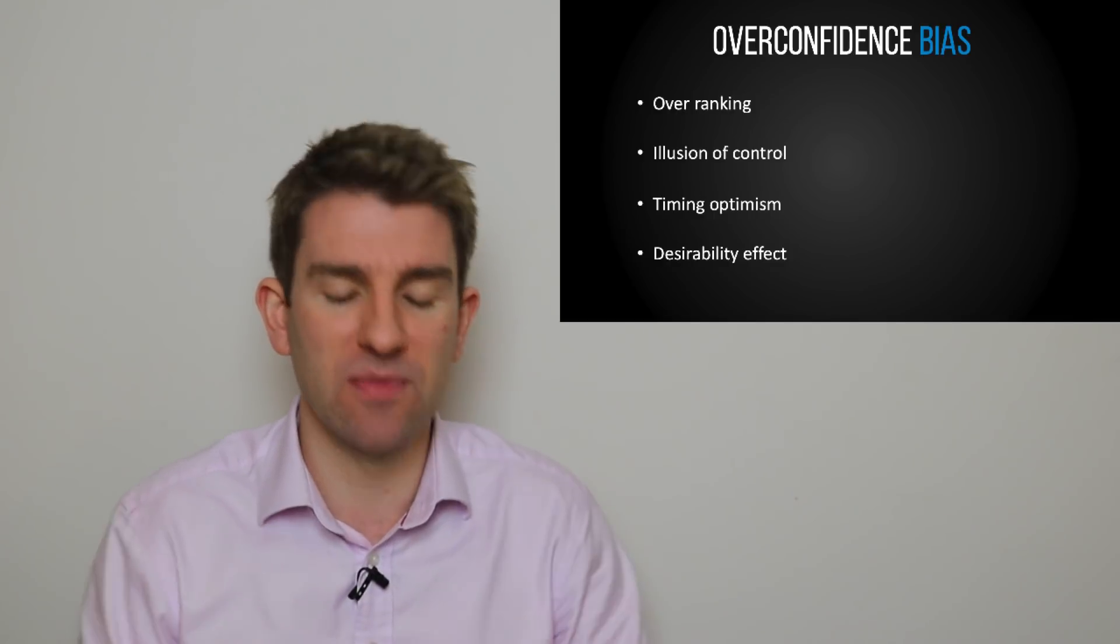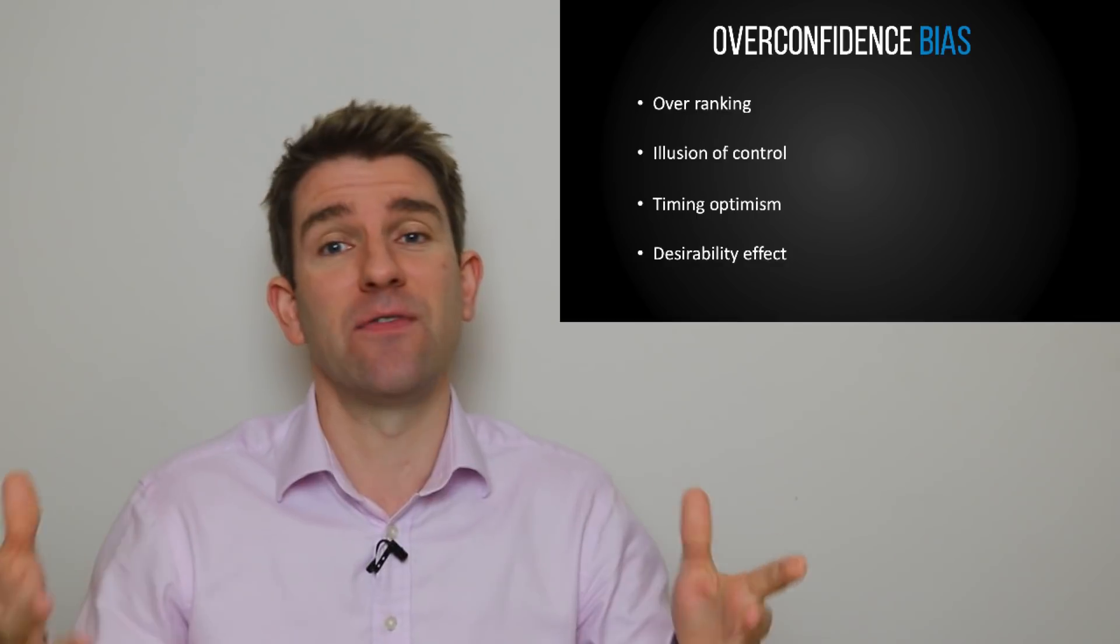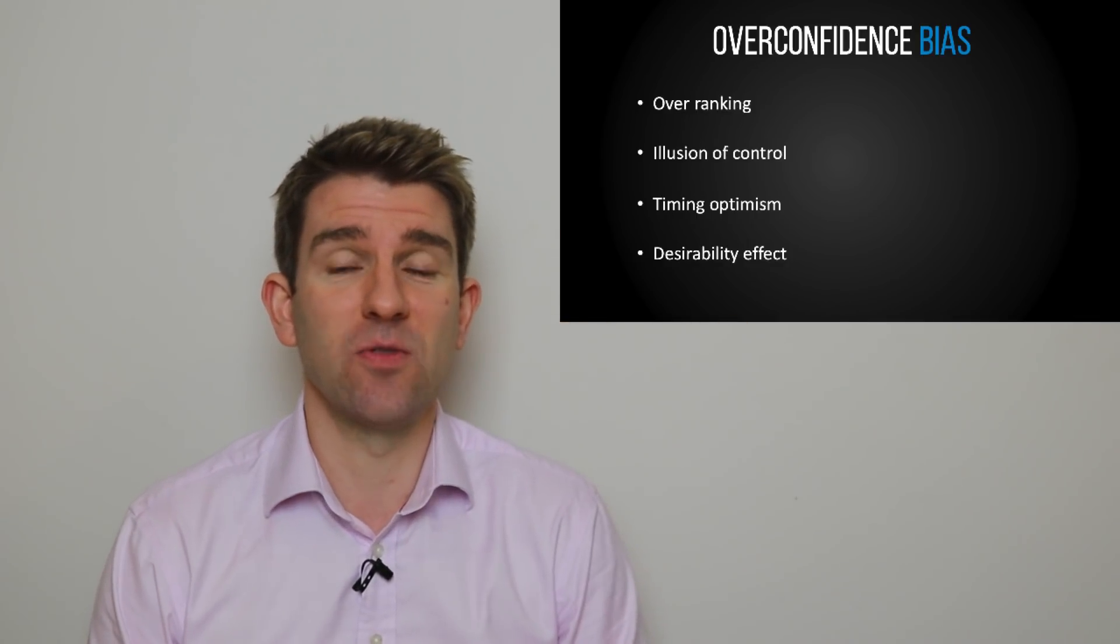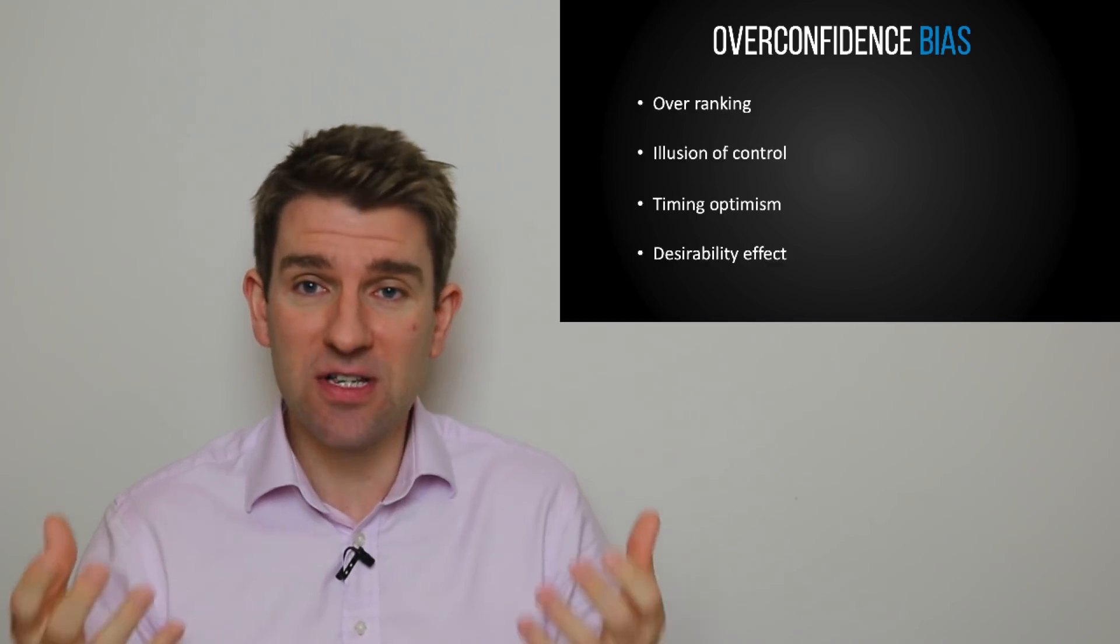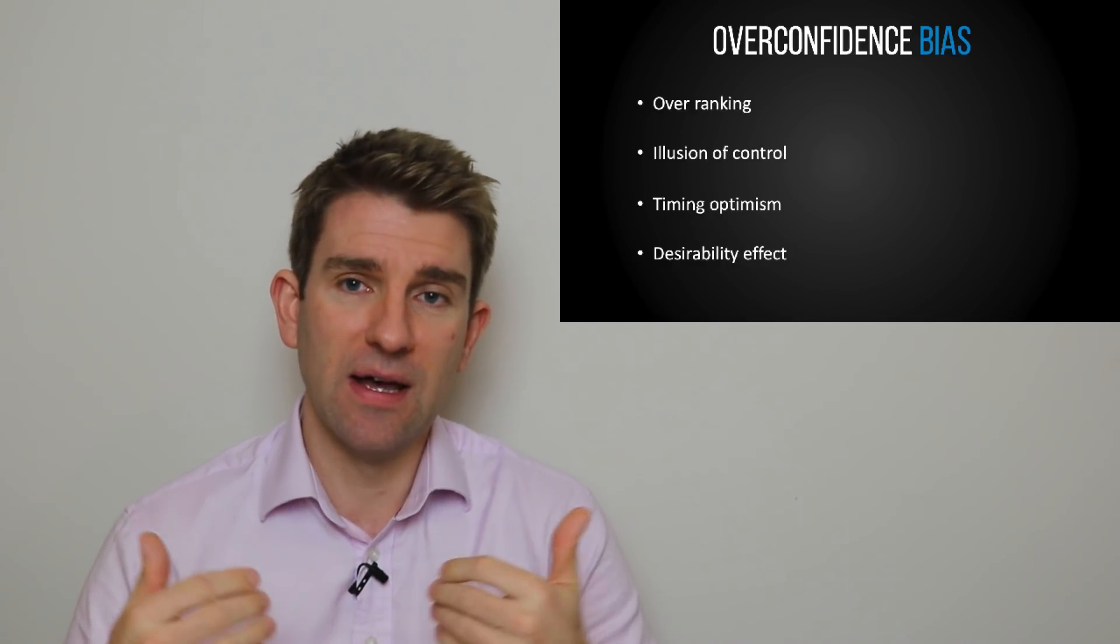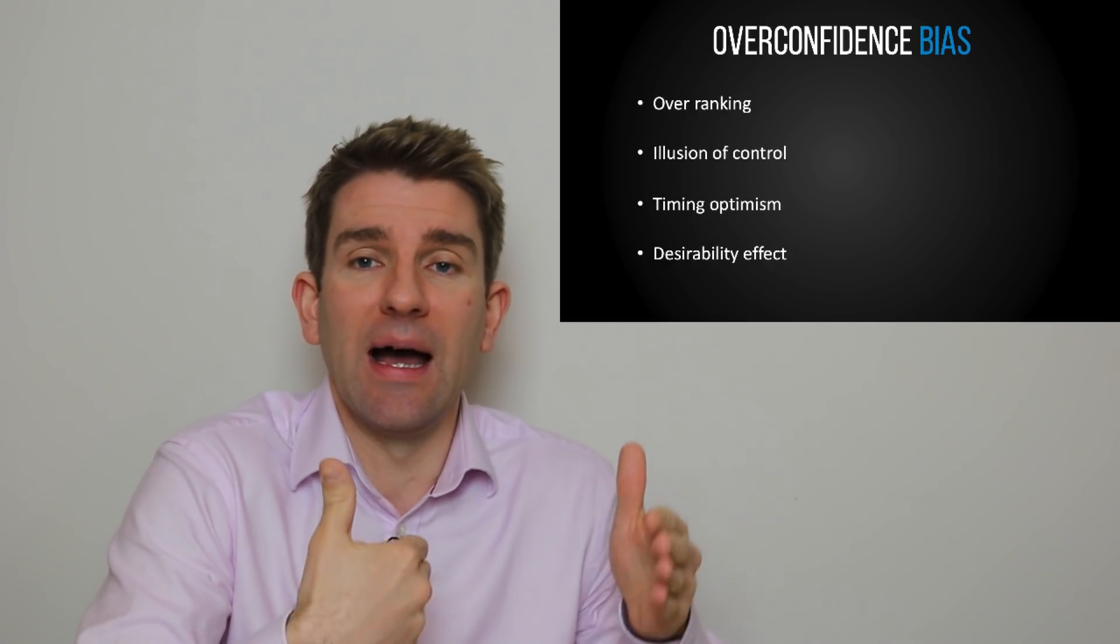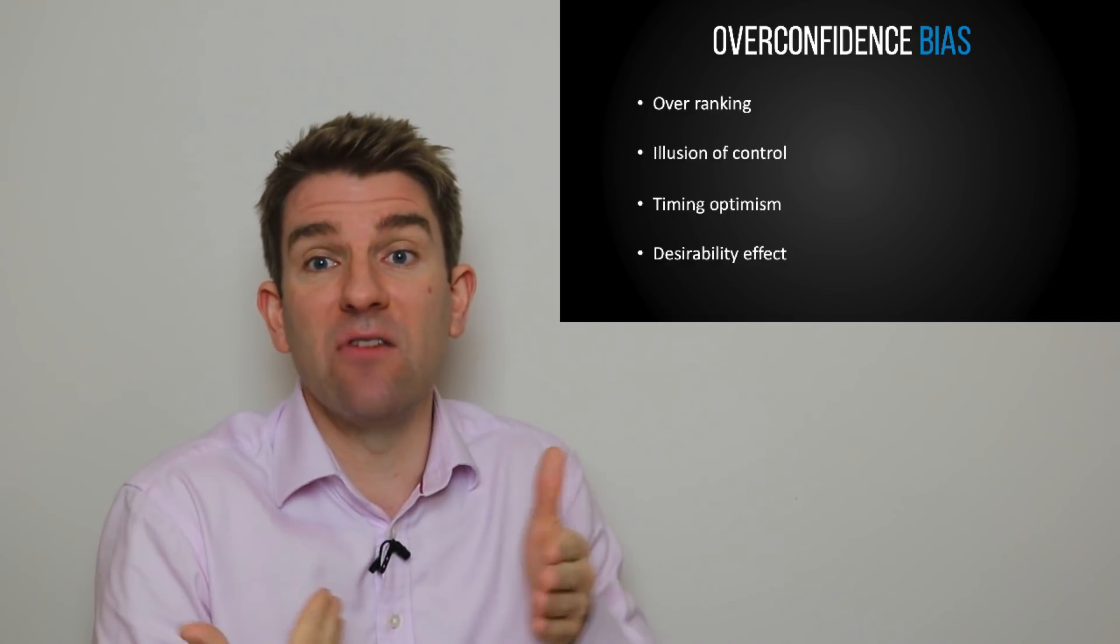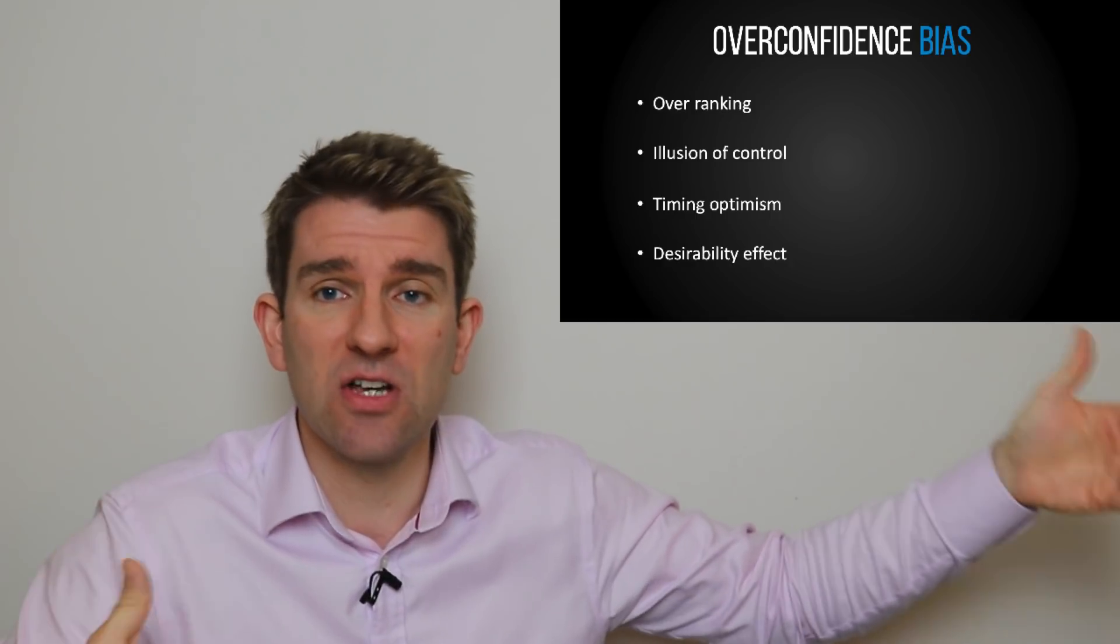So number three, timing optimism. I have to say, this is a big one for me, guys. Maybe it is for you. In fact, just put in the comments section below which one of these is the big one for you. This is a big one for me. It's the overconfidence in your ability to do something in a shorter window of time. So you overestimate how quickly you can do some work. So you say, I can do that in a day. In reality, it probably takes you three days. Or if it's a bigger project, you might think it takes you a year, but in reality, it takes you three years.